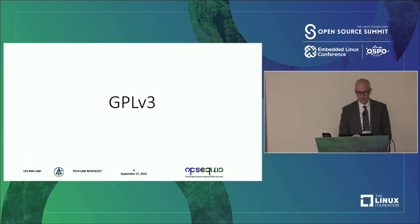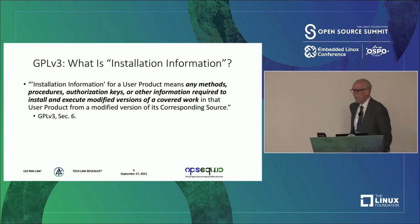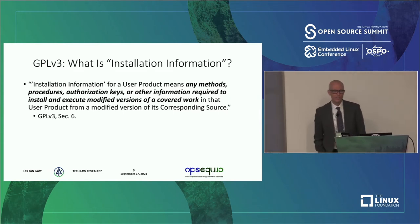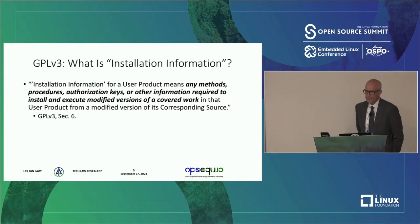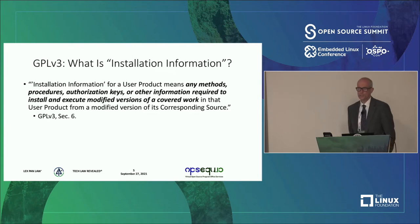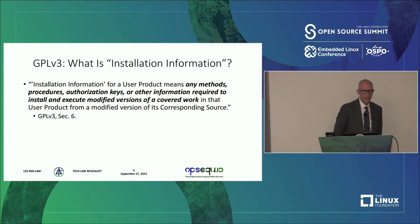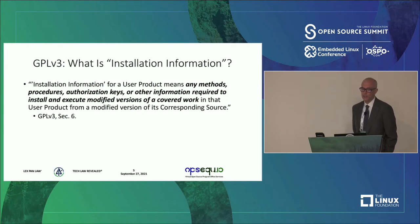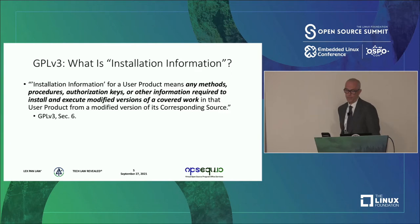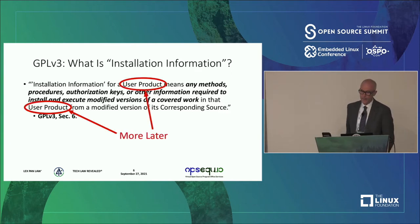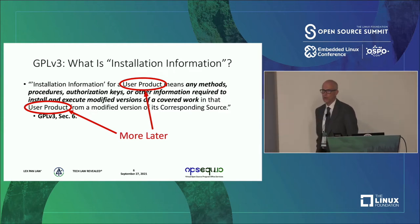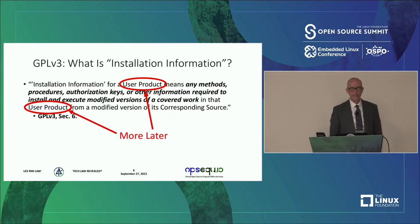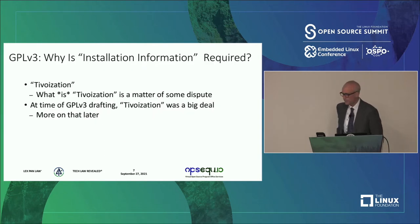Let's start with GPL v3. There is a provision in GPL v3 called the installation information provision. It is a requirement akin to the source code obligations of GPL, that says you must provide any methods, procedures, authorization keys, or other information required to install and execute modified versions of the code. That's from GPL v3 section 6. There's also a limitation on this requirement that relates to user products.